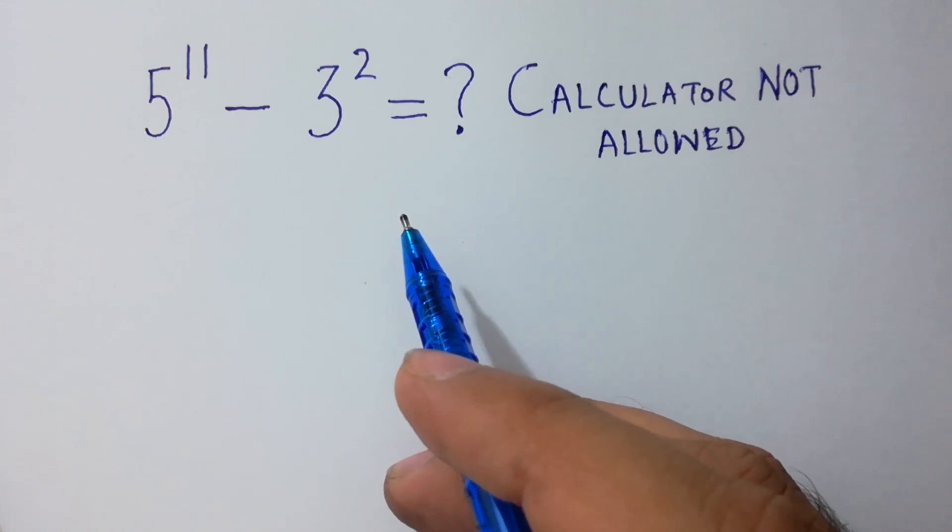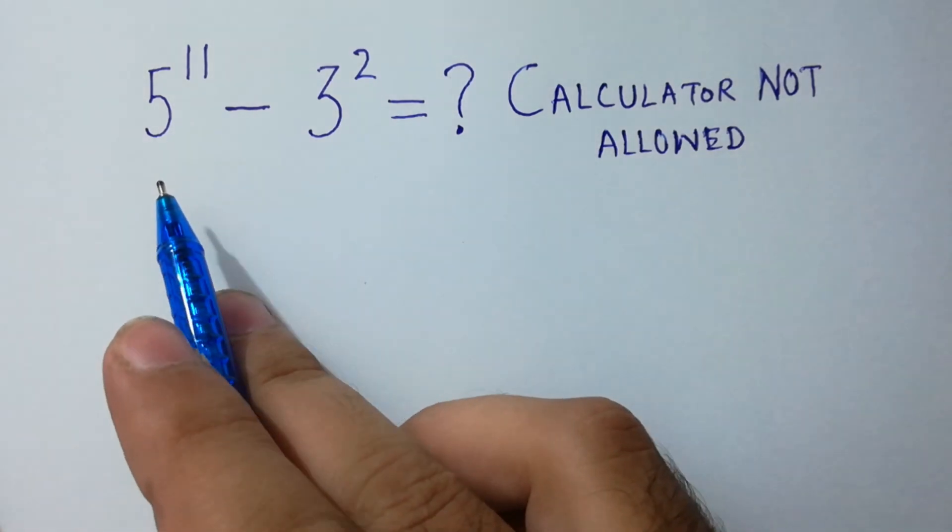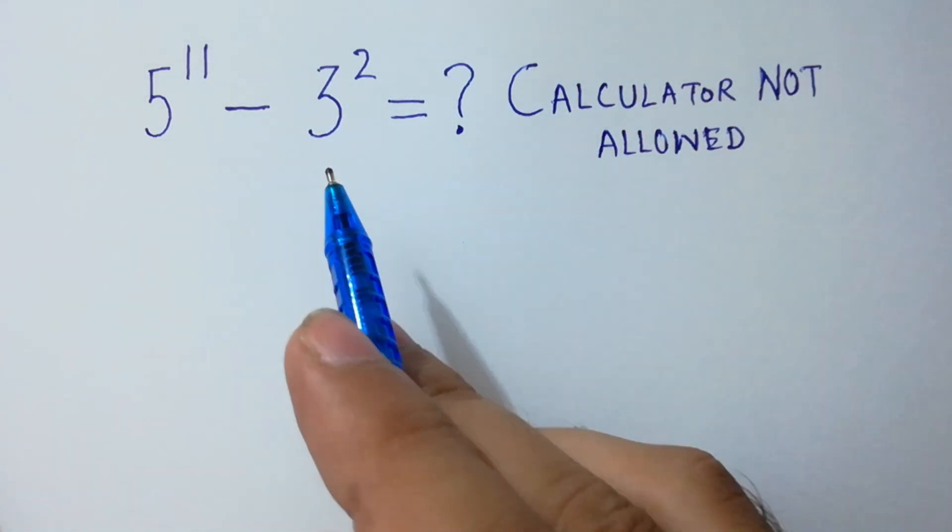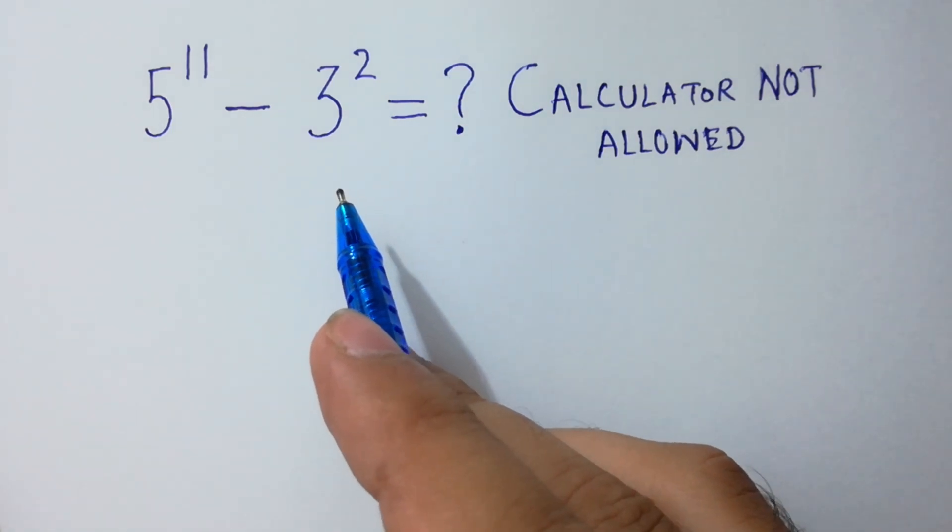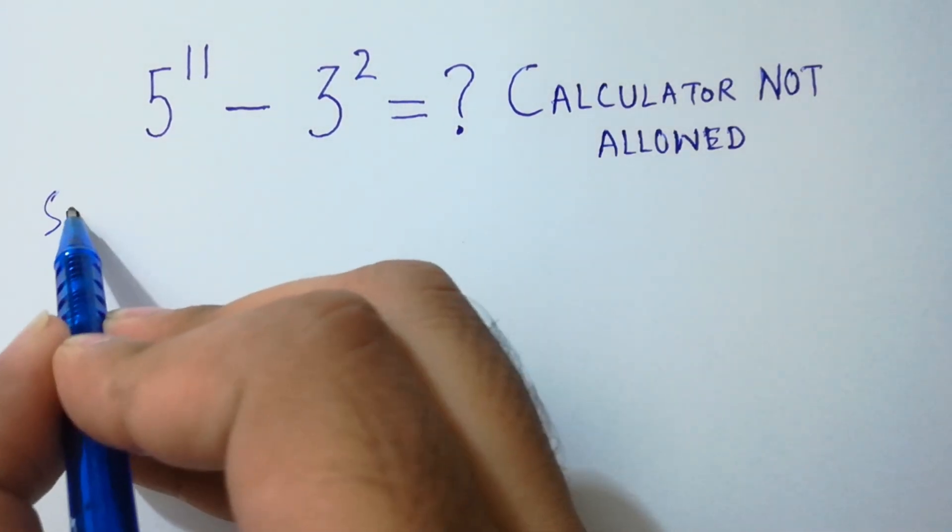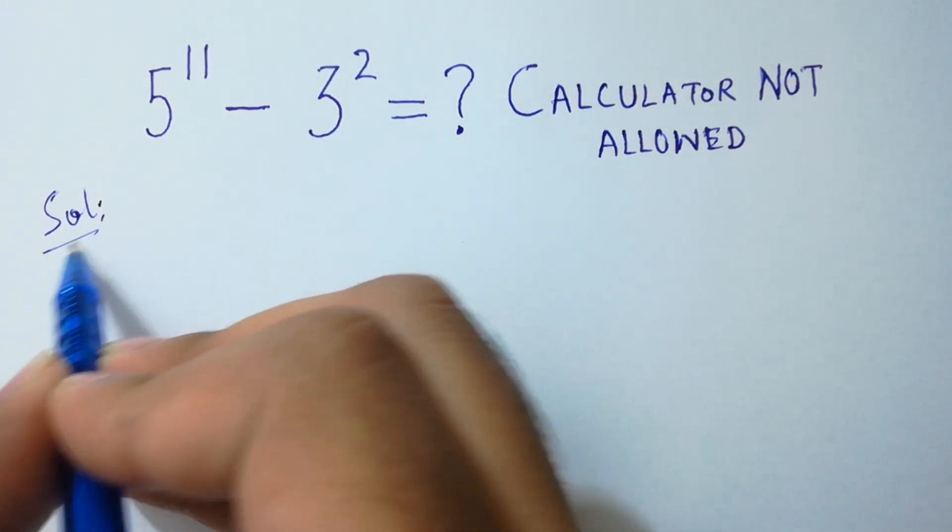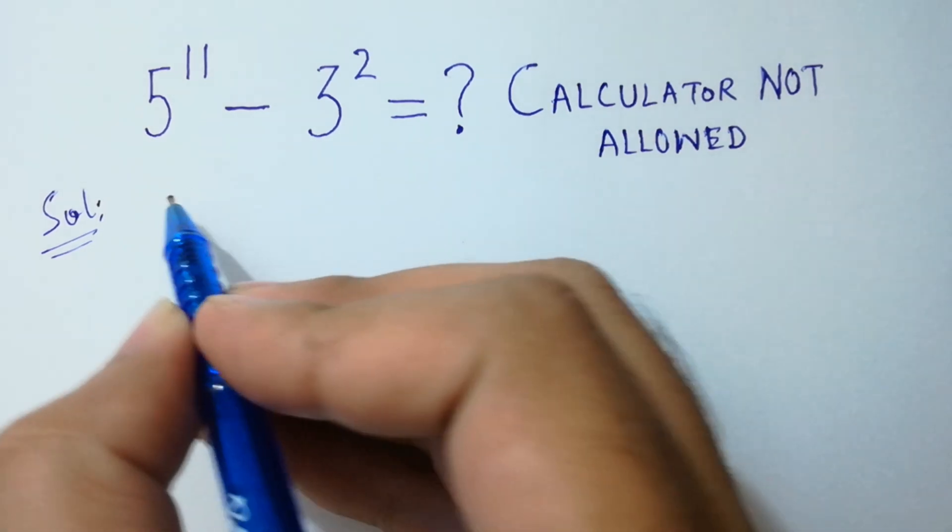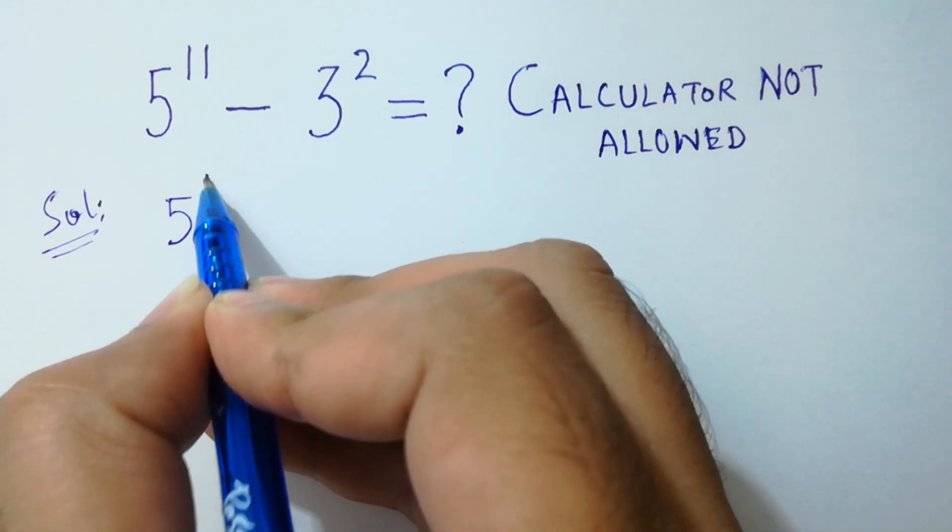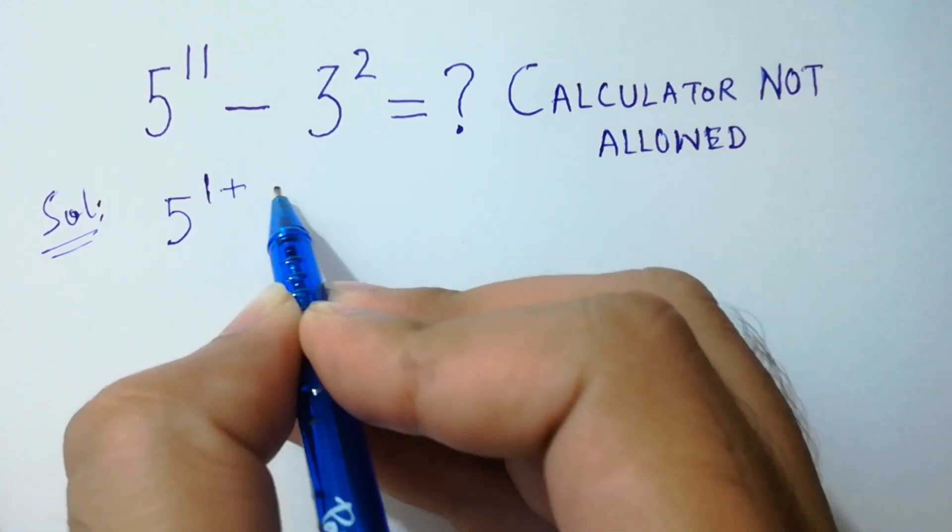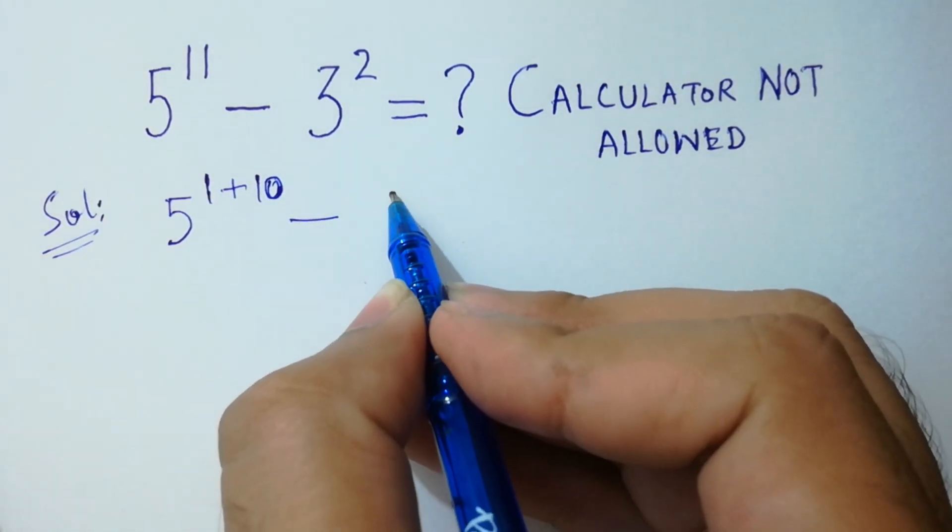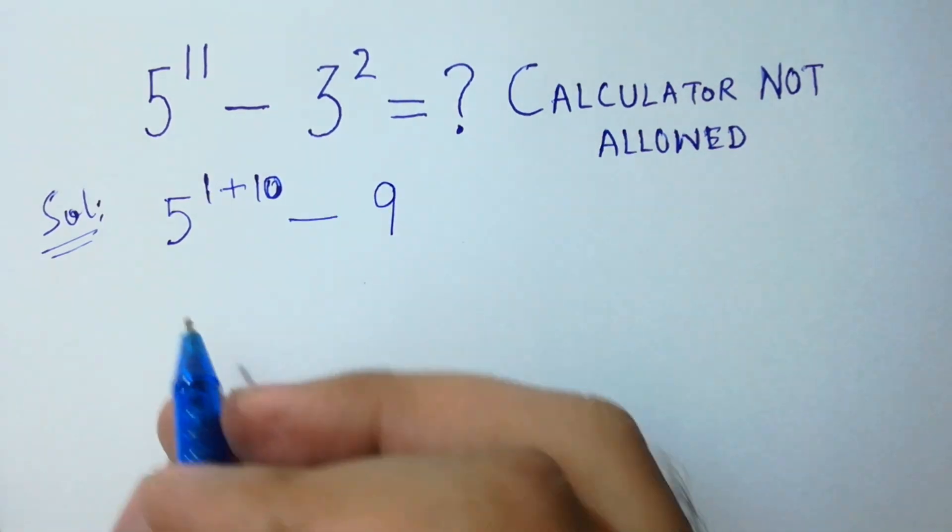Hello friends, can you solve this: 5 to the power 11 minus 3 square without using any calculator? Let's solve it. It will be equal to 5 to the power 1 plus 10 minus 3 square, which equals 9.